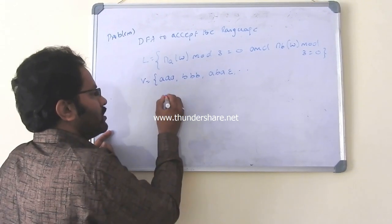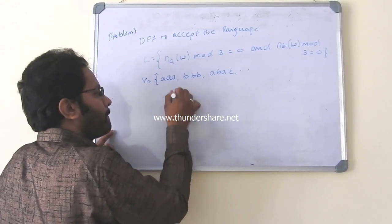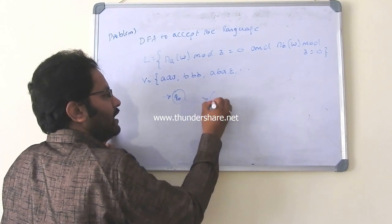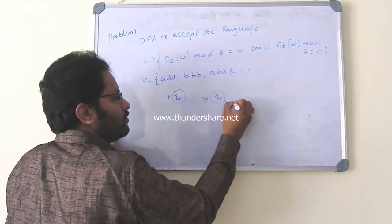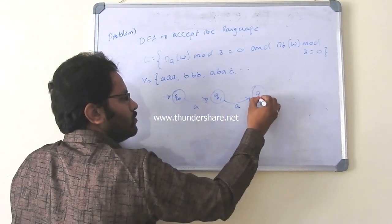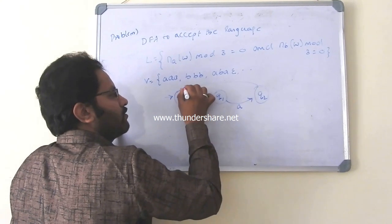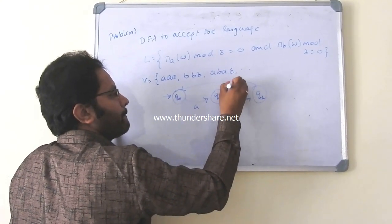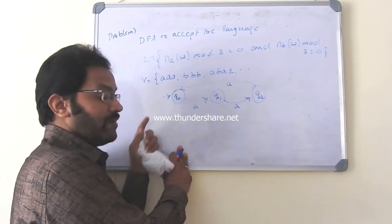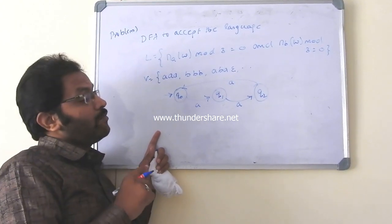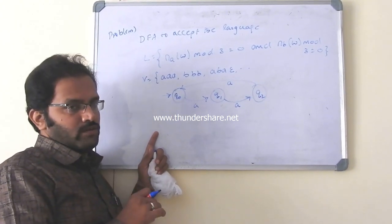Now, start from Q naught. With the input symbol A, reach Q1. With the input symbol A in Q1, reach Q2. And come back to Q naught with the input symbol A.